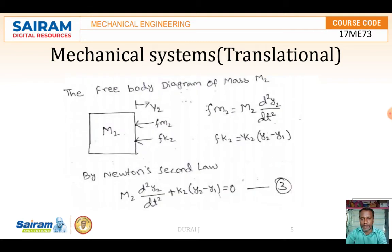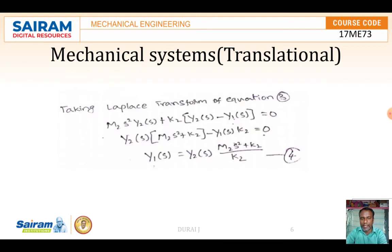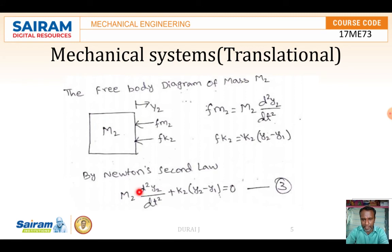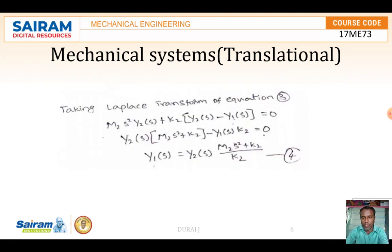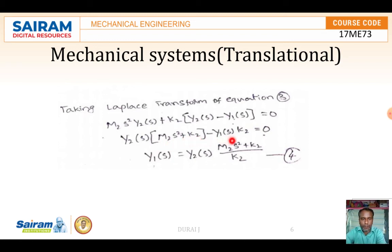Taking the Laplace transform of the M2 equation to convert to frequency domain: M2·s²·Y2(s) + K2·(Y2(s) - Y1(s)) = 0. Rearranging: Y1(s) = Y2(s)·(M2·s² + K2) / K2.